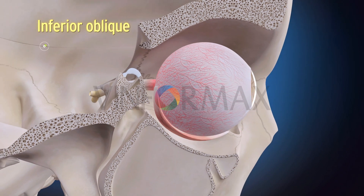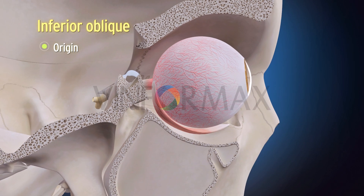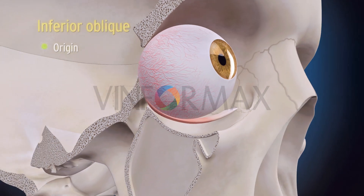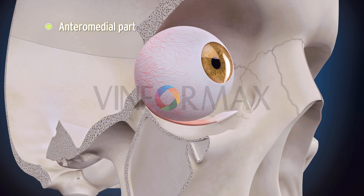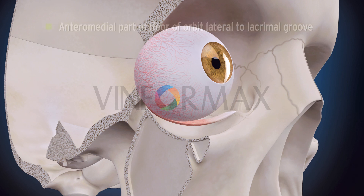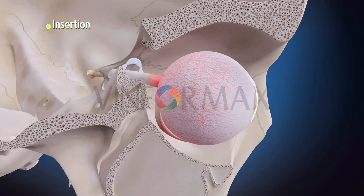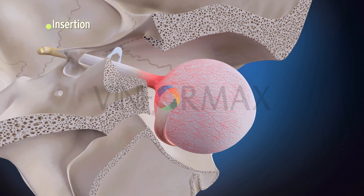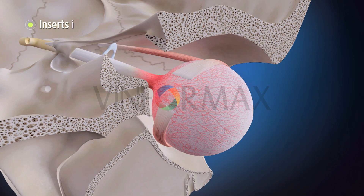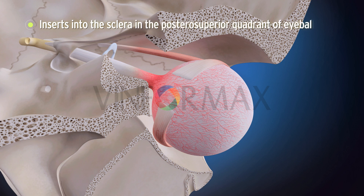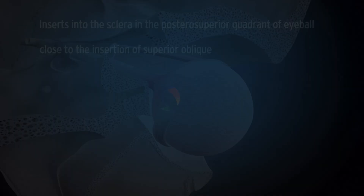The inferior oblique originates from the anteromedial part of the floor of the orbit, lateral to the lacrimal groove. It inserts into the sclera in the posterior superior quadrant of the eyeball behind the equator, close to the insertion of the superior oblique.